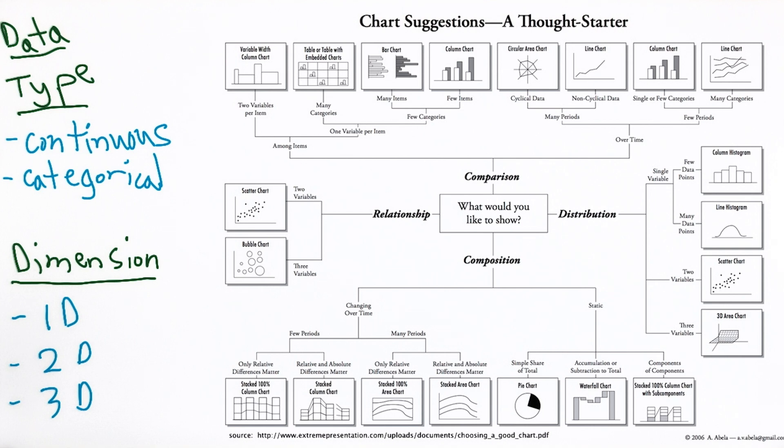For example, I might ask myself, how many dimensions do I have? One dimension, two dimensions, three dimensions? And what type is each? Continuous, categorical.